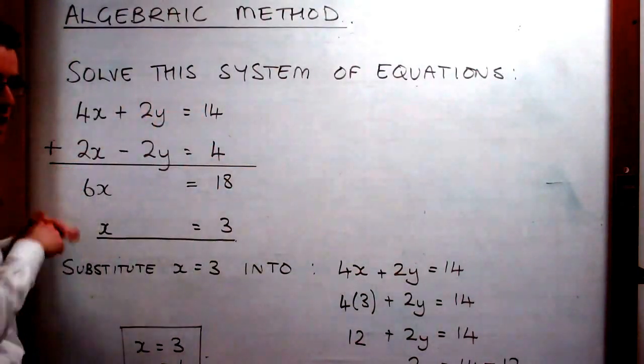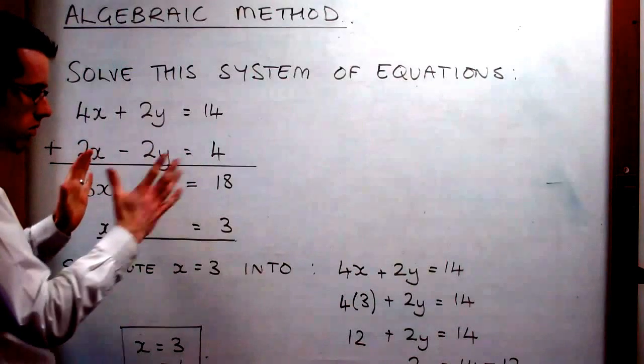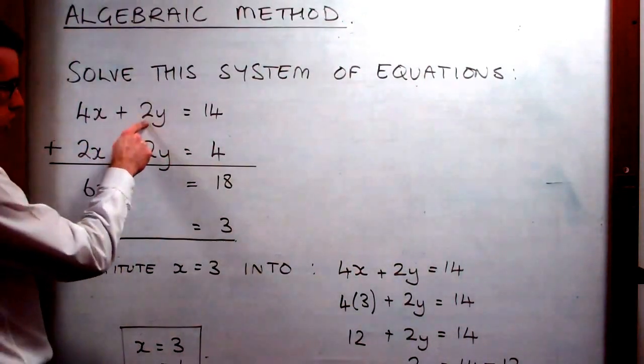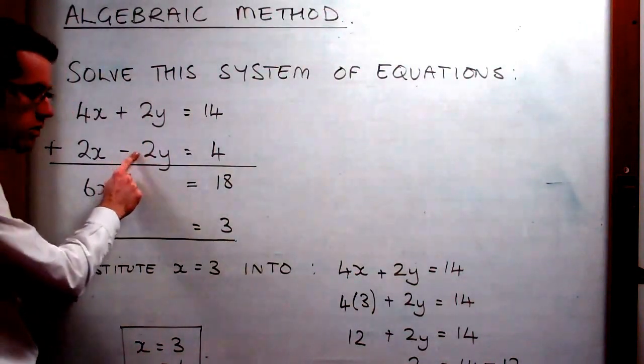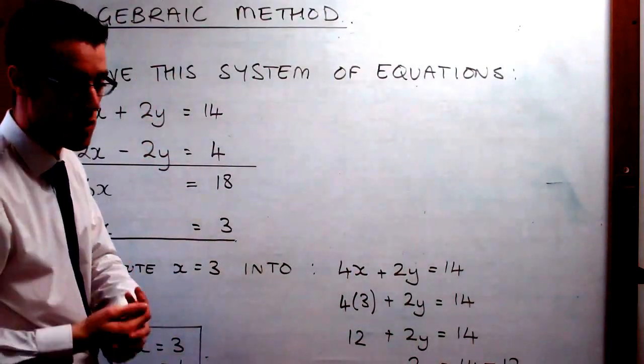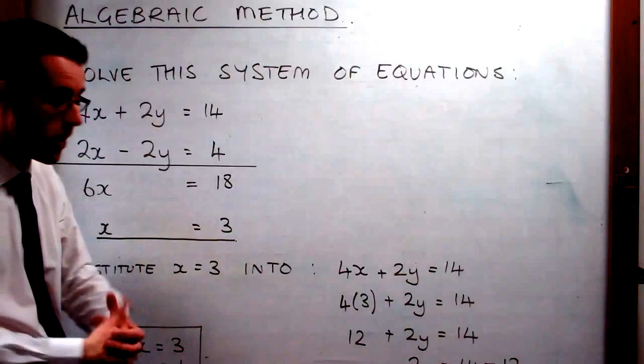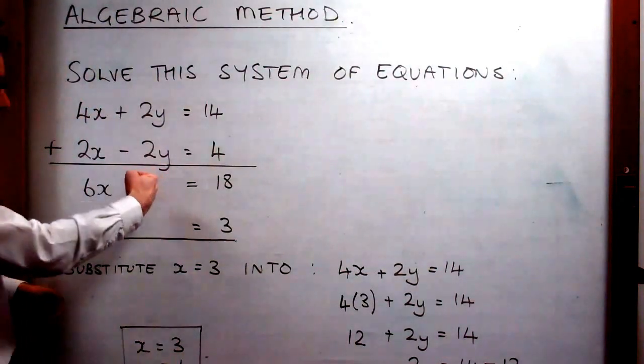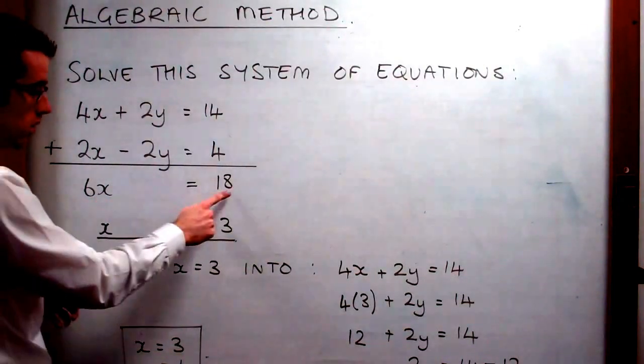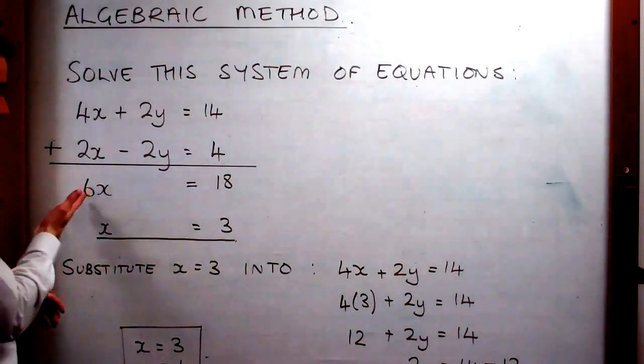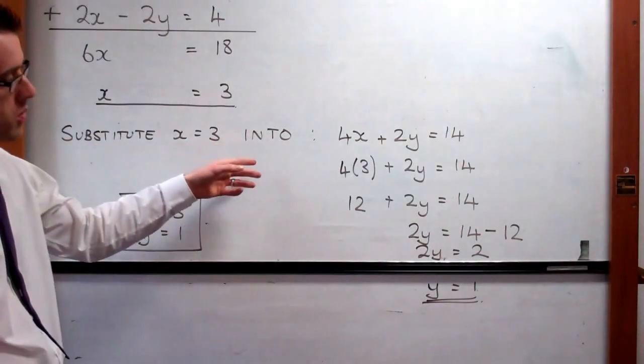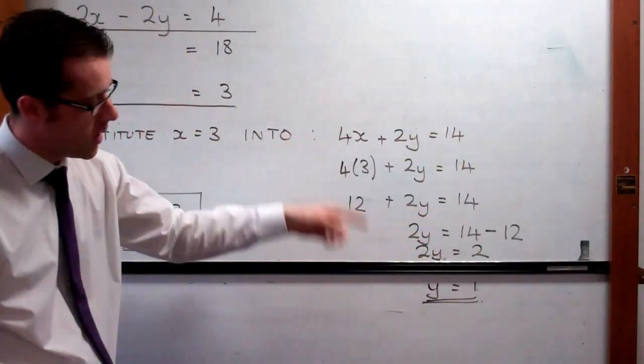And what this does is really cleverly is this allows us to go 2y plus minus 2y or negative 2y. And that gives us zero. So that means that the y terms are eliminated because you've got 2y and you're taking away 2y. So there's nothing left. So this is eliminated. If the y term is eliminated, that means we only have one unknown and one number. So we can solve that. So 6x equals 18. We solve for 3. And then it's simply a case of substitution of x equals 3 into our equation to get y equals 1.